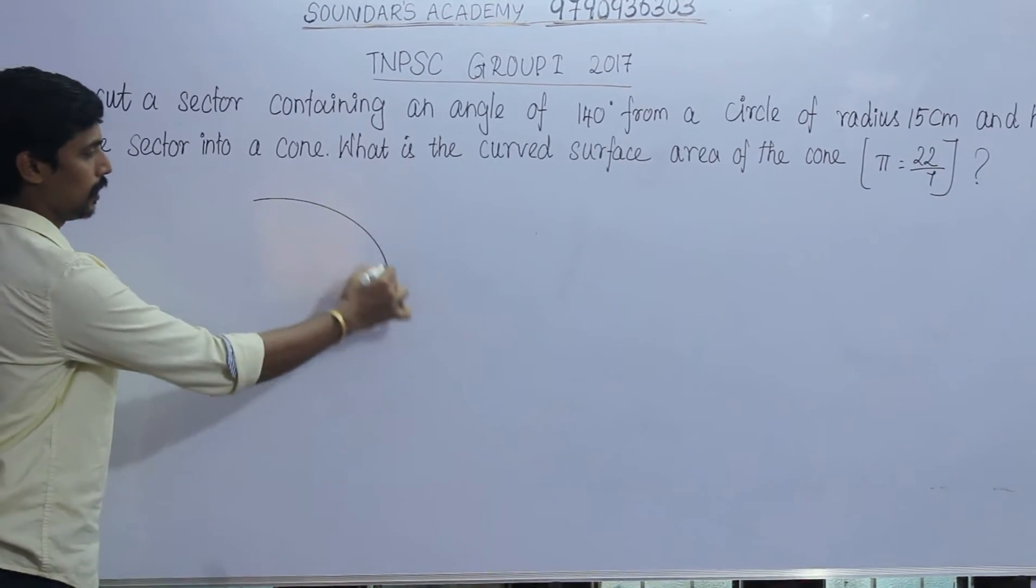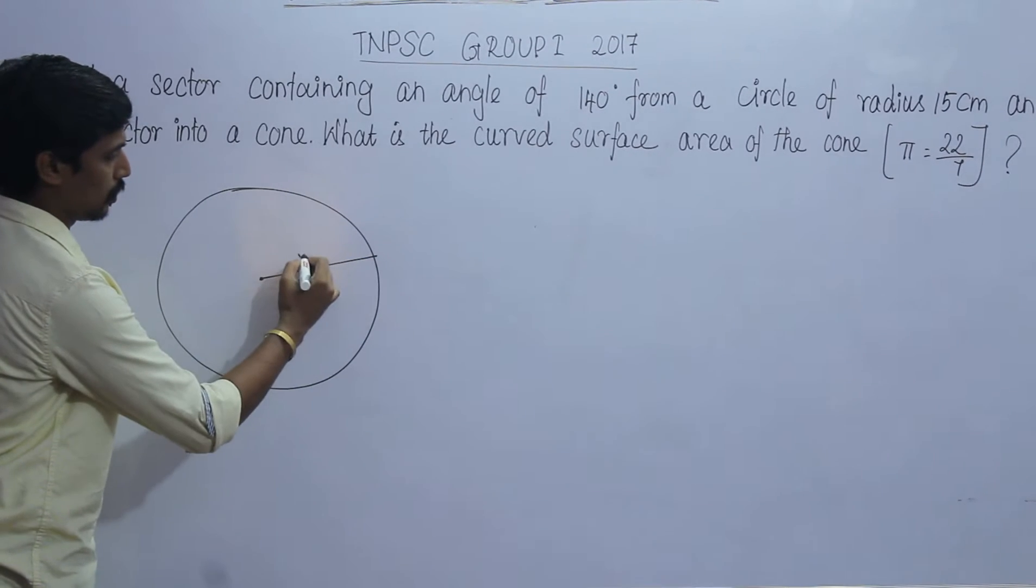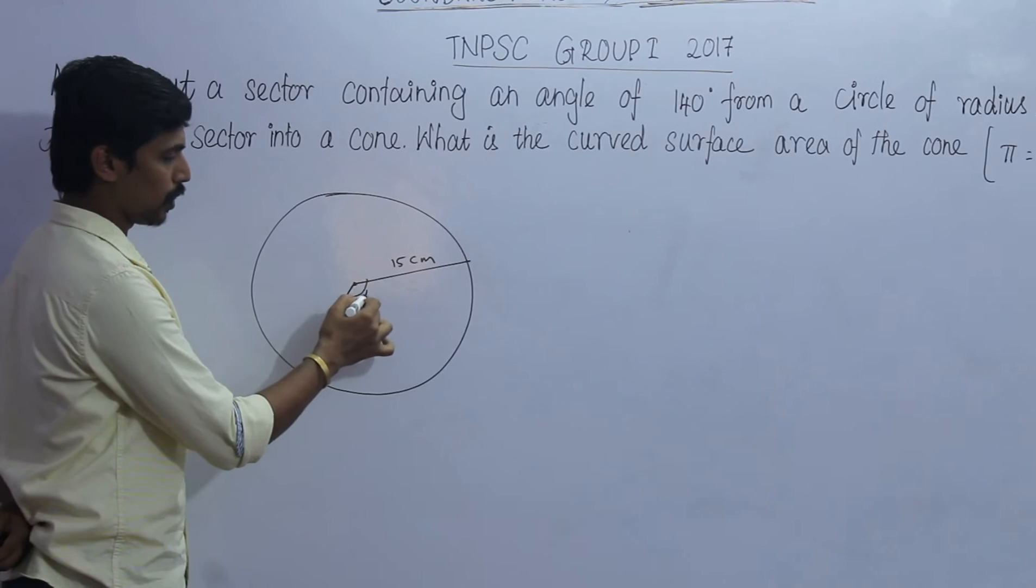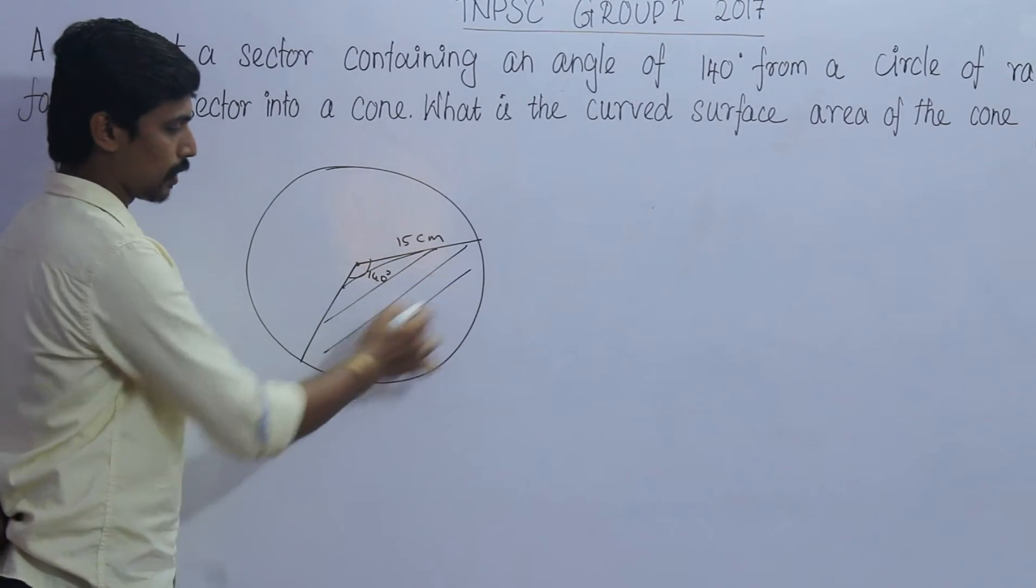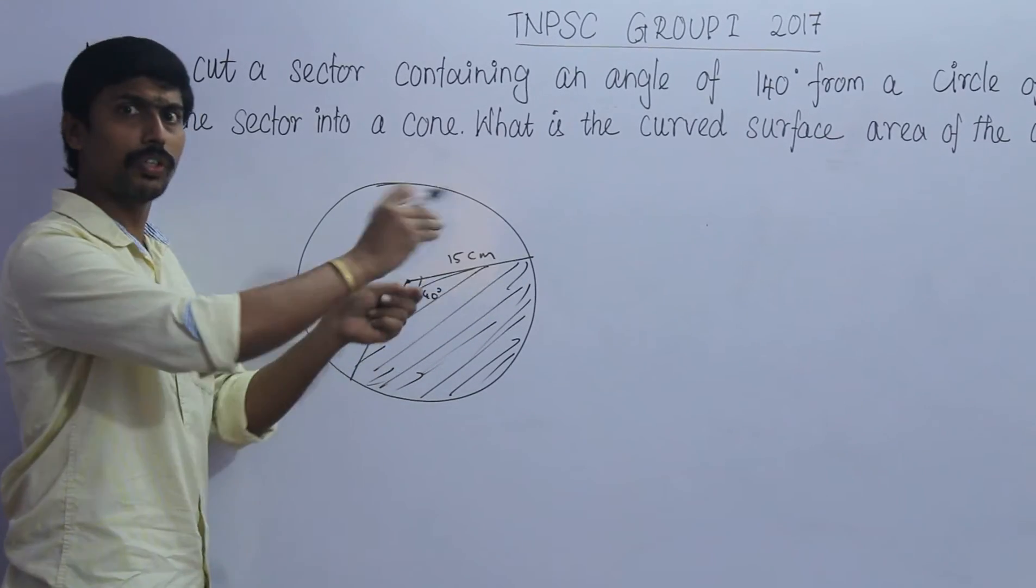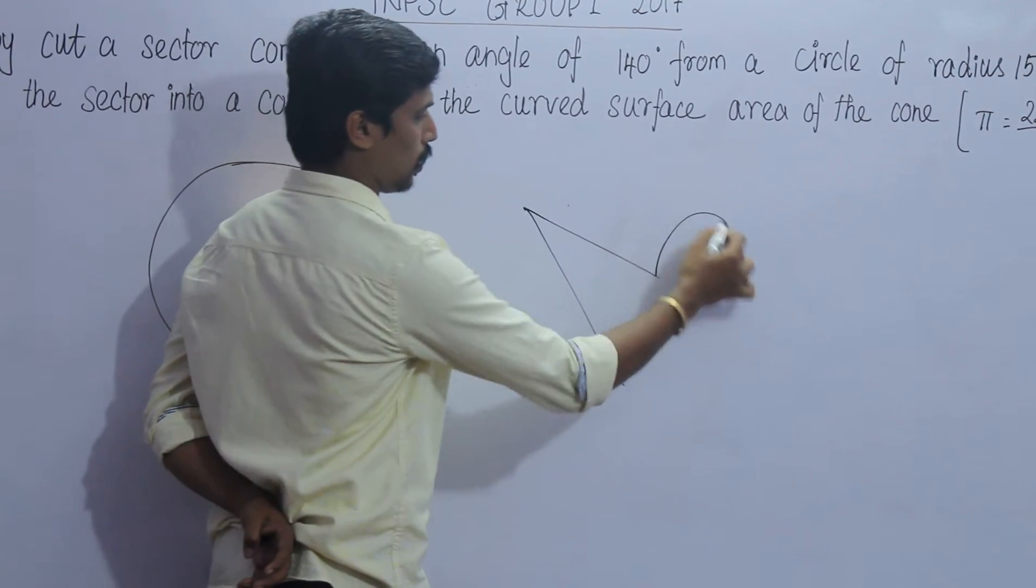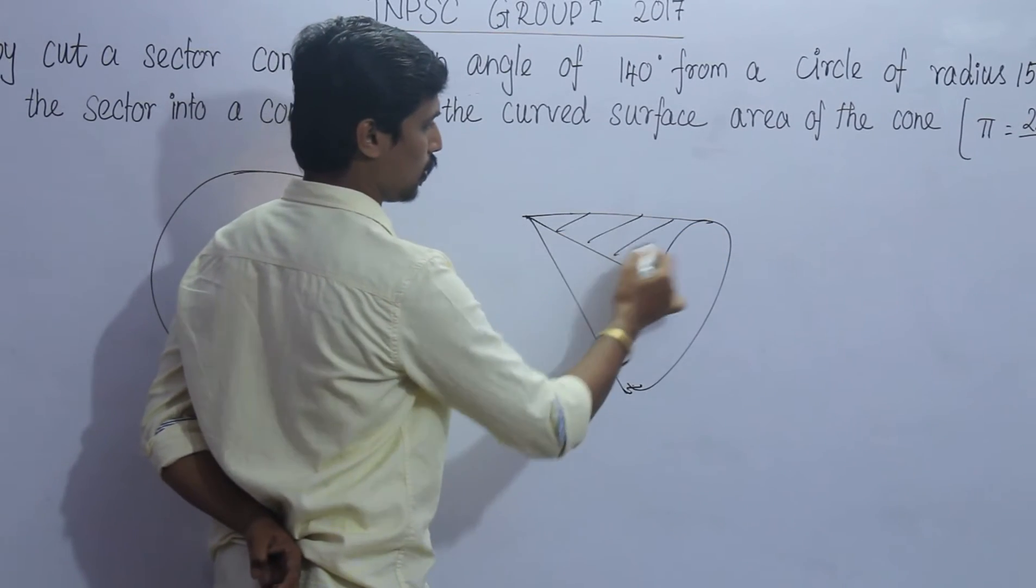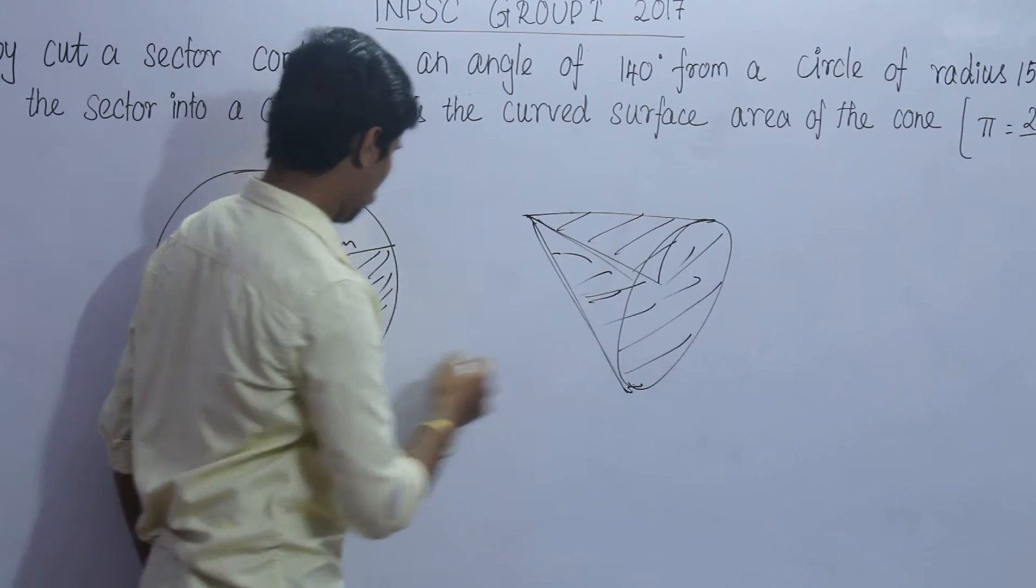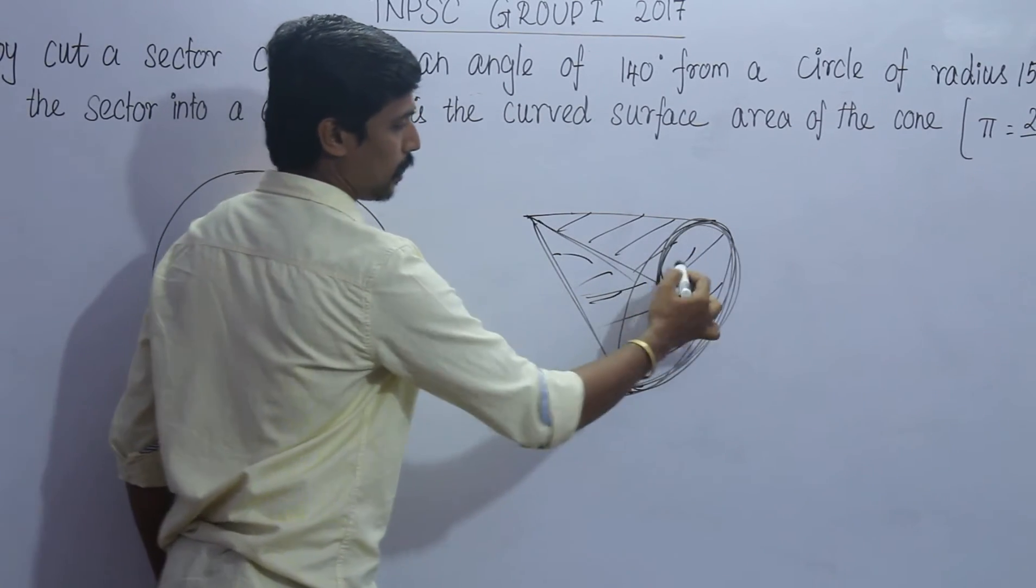What are we talking about? There is a circle. There is a circle of radius 15 cm. A sector of 140 degrees. So here is the circle, and this is the sector of 140 degrees. We cut this region from the circle. If we fold this, we can form a cone. This curved edge will become the curved surface of the cone.